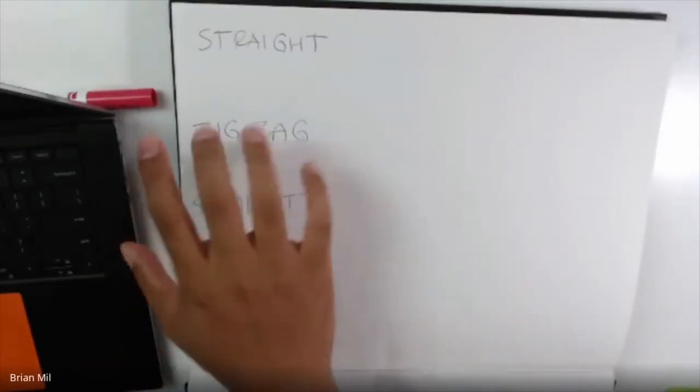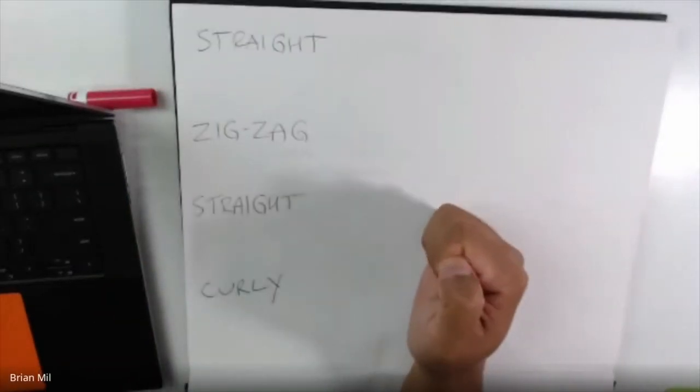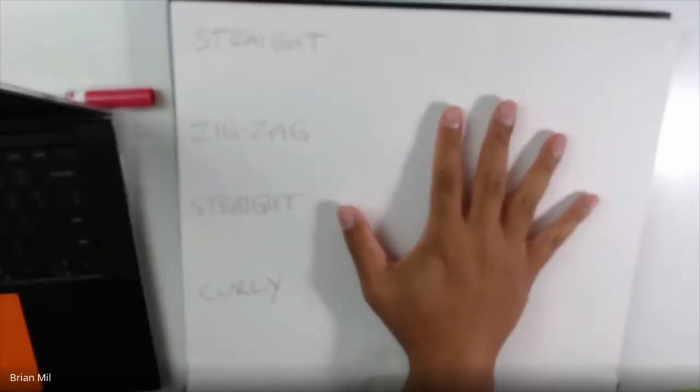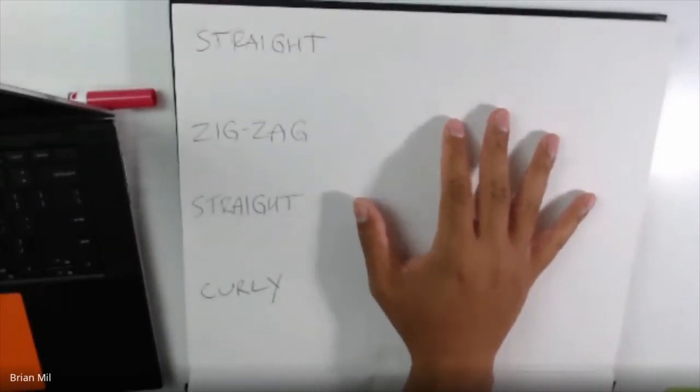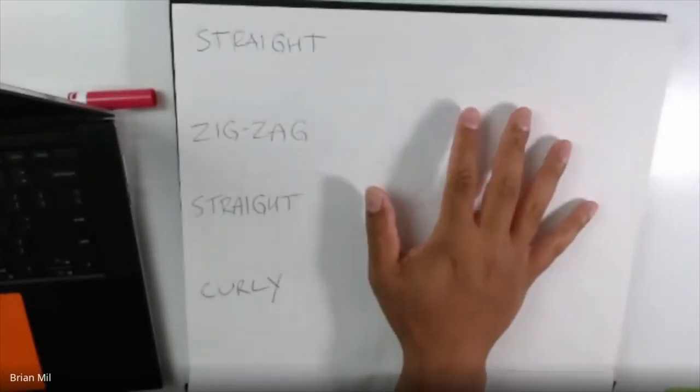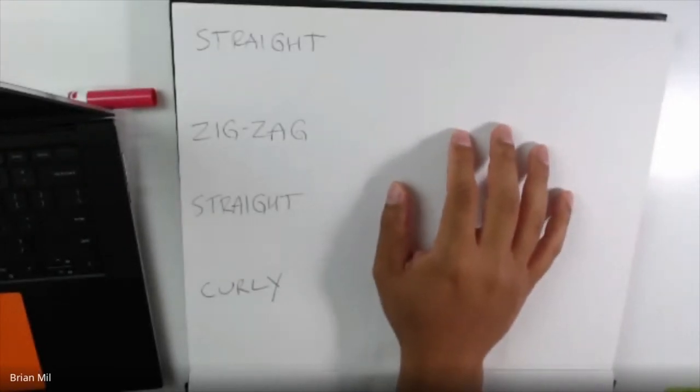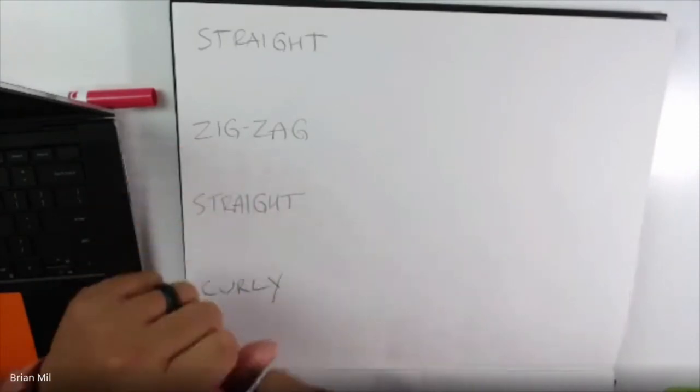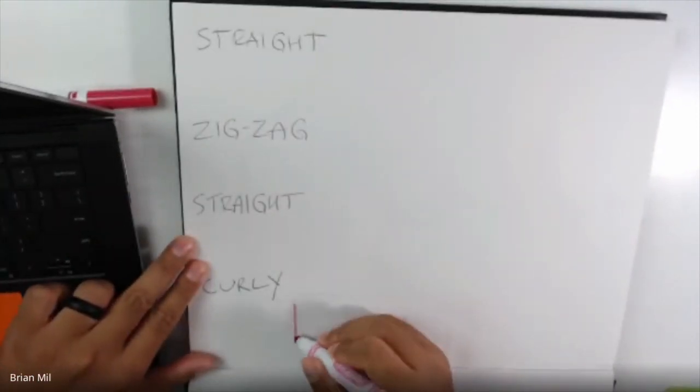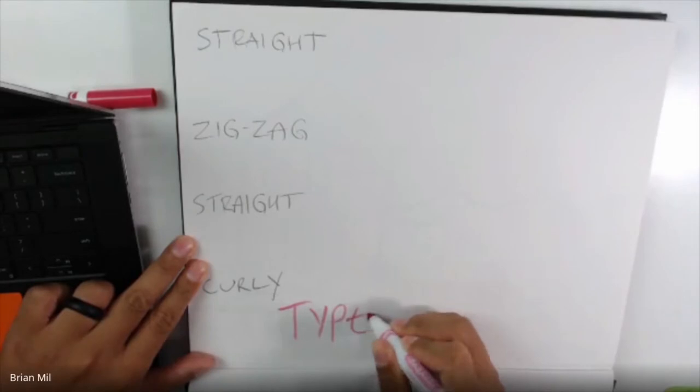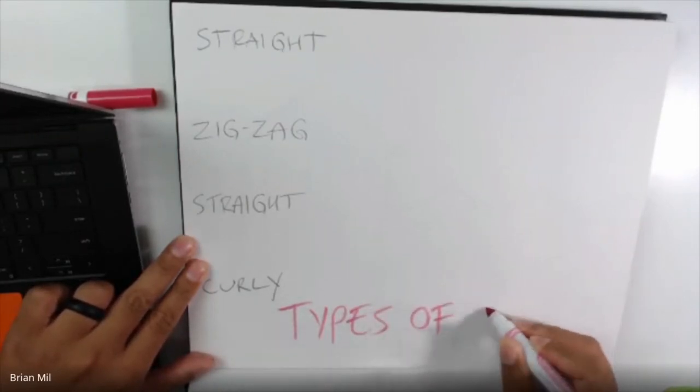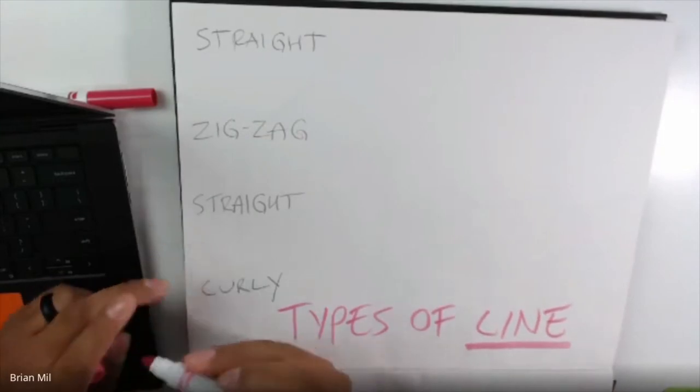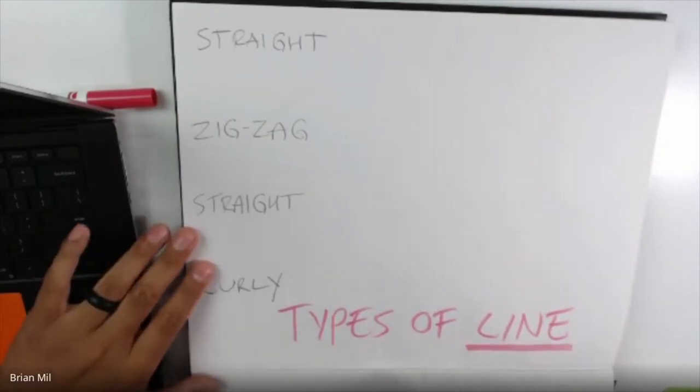And you should be able to see this. So can you guys give me a thumbs up if you guys can see this piece of paper? All right, good job. So what I want to talk about with you guys are the different types of line. So these are four different types of line, okay?